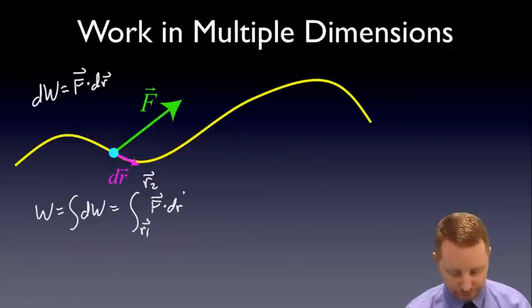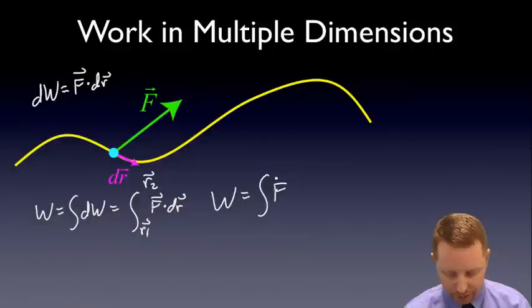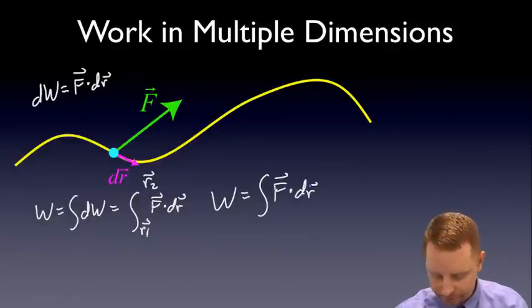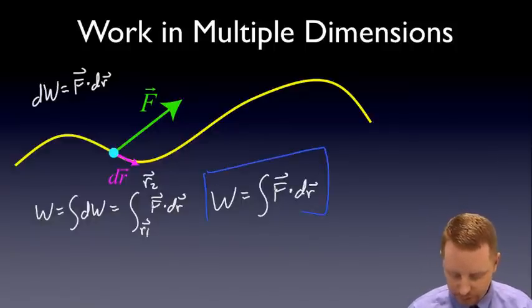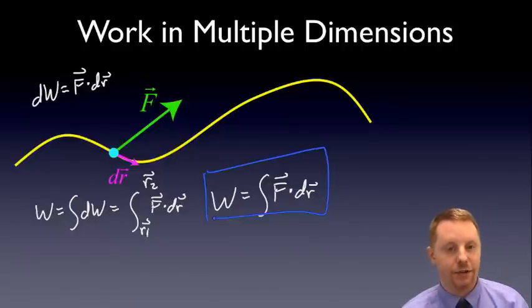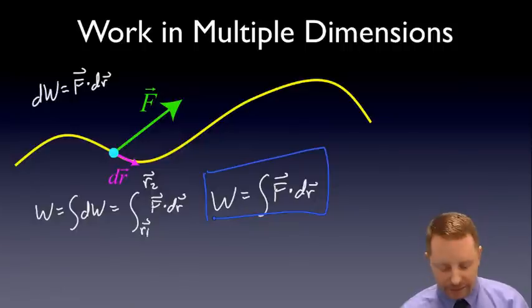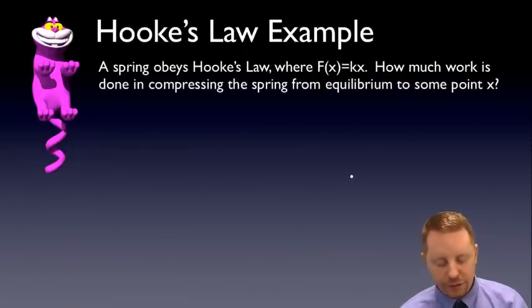it'll be the integral from some initial position r1 to some final position r2 of f dot dr. Or in general form, work is the integral of f dot dr. And we call this a line integral because you're integrating over a line. Let's take an example and see how this works going back to Hooke's law, a spring.